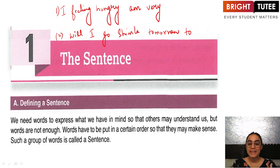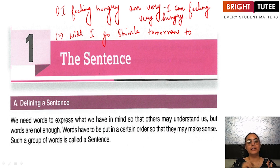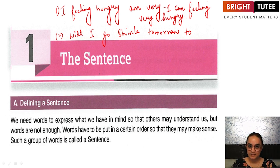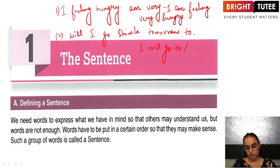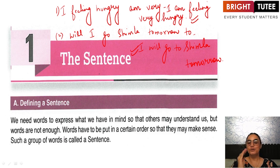Those group of words which make sense can be known as sentences. The first group of words will have to be rewritten as: 'I am feeling very hungry.' When I have rearranged these group of words, they can now be termed as a sentence. Similarly, the second group of words becomes: 'I will go to Shimla tomorrow.' Now I can call both of these sentences, because the group of words have been rearranged and they are making sense.